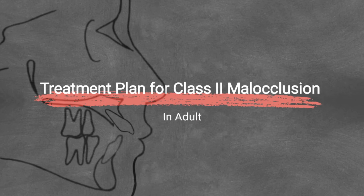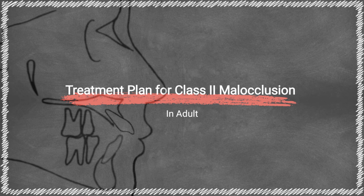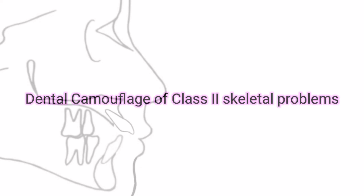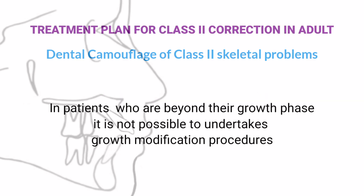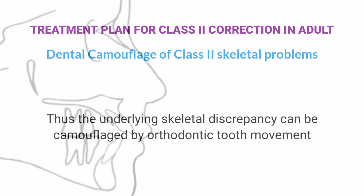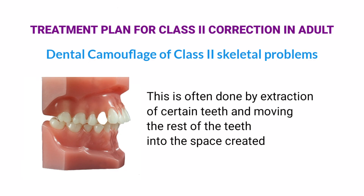Treatment plan for Class II correction in adults — Dental Camouflage of Class II skeletal problems: In patients who are beyond their growth phase, it is not possible to undertake growth modification procedures. Thus, the underlying skeletal discrepancy can be camouflaged by orthodontic tooth movement. This is often done by extraction of certain teeth and moving the rest of the teeth into the space created.